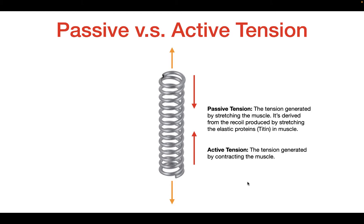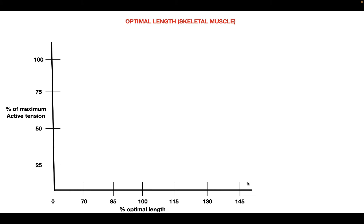Active tension is the tension generated by contracting a muscle — passive tension comes from stretching it, while active tension comes from contraction. The next concept is the optimal length of a muscle. If you take a muscle fiber, stretch it to a certain length, stimulate it, and measure the tension produced, then repeat this at progressively greater lengths many times, you generate a characteristic graph.